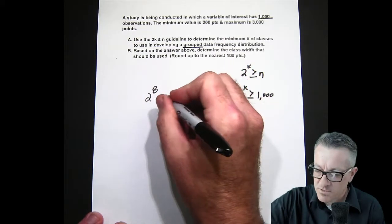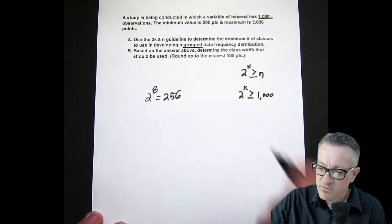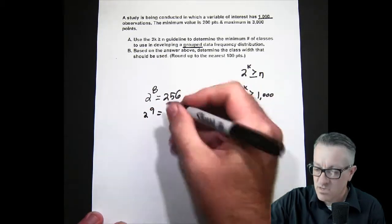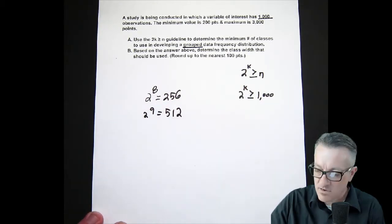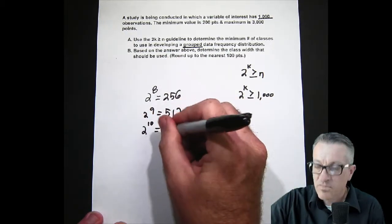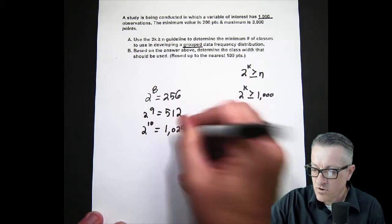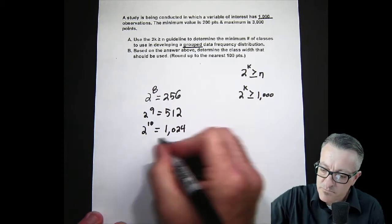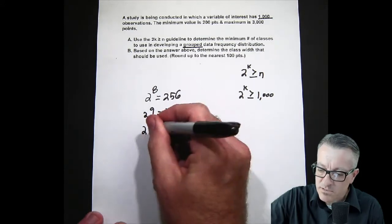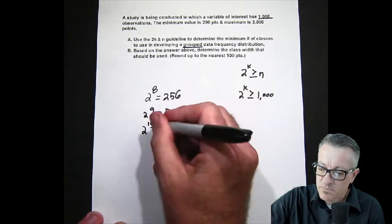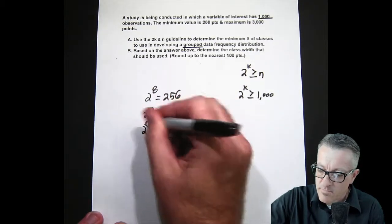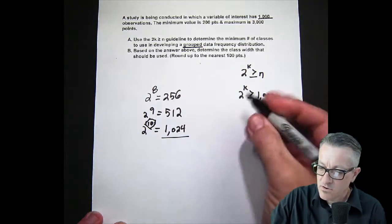So we have to keep going up until we at least get to 1,000. So 2 to the 9th ends up being only 512, not enough. So 2 to the 10th, we're getting close, right? It is 1024. So this is what we're going to use. We don't need to go past this. We're going to use not this value but we're going to use this right here: 10 groups or 10 classes. Sometimes they call them buckets. So we're going to use 10.